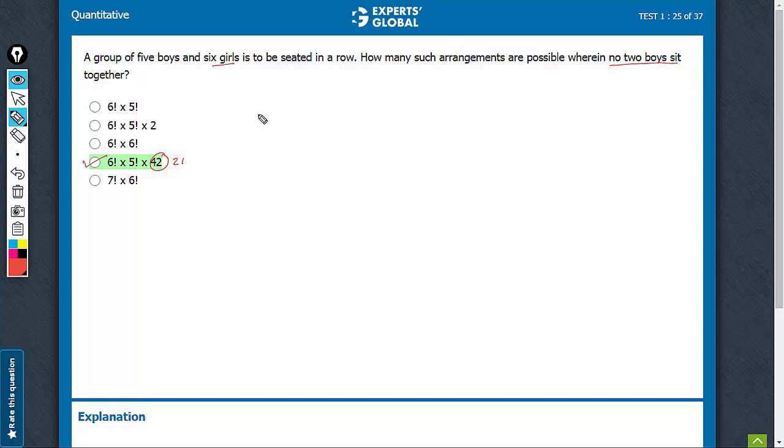So first, have the girls arranged. Six girls can be arranged in 6 factorial ways, and these six girls would create seven places for the boys.